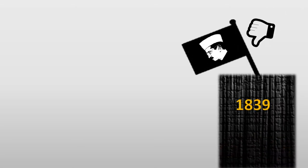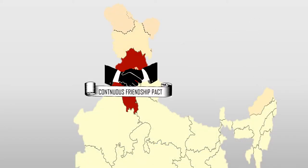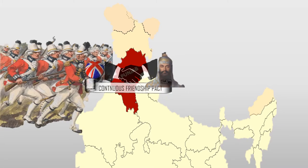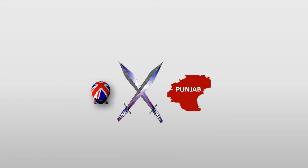After the death of King Ranjit Singh in 1839, a political failure took place due to improper laws in Punjab. Even after having a continuous friendship pact with the King of Punjab, the British broke those rules and tried to occupy Punjab. Therefore, a war took place between the British and Punjab in 1845.